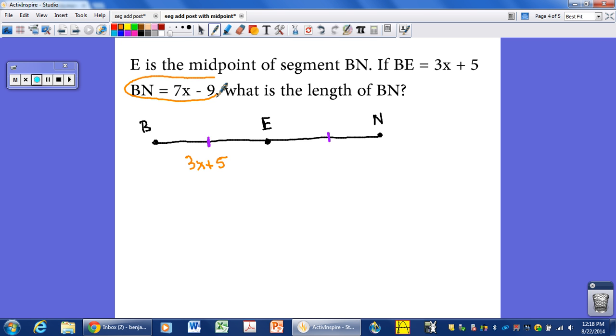this is once again the entire length. The entire length. So let's put that over here. 7X minus 9 is the entire length. What is the length of BN? So if we want to know the length, we have to solve for X, so we have to set up some type of relationship.